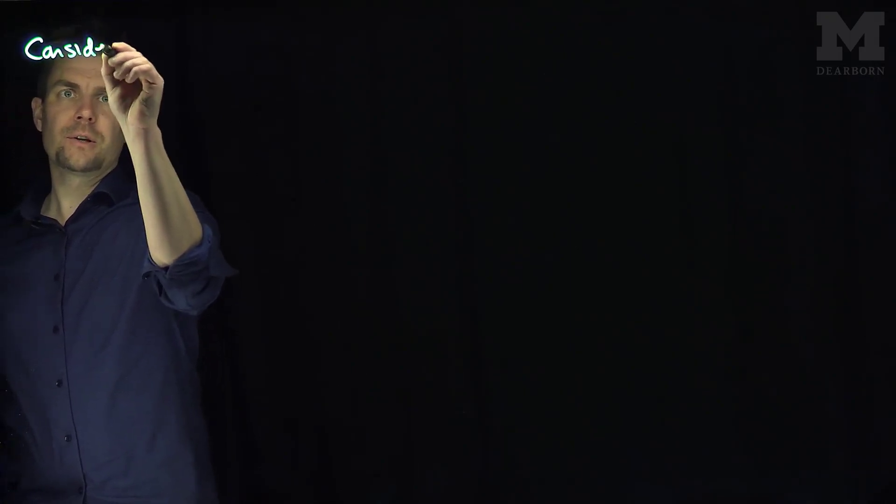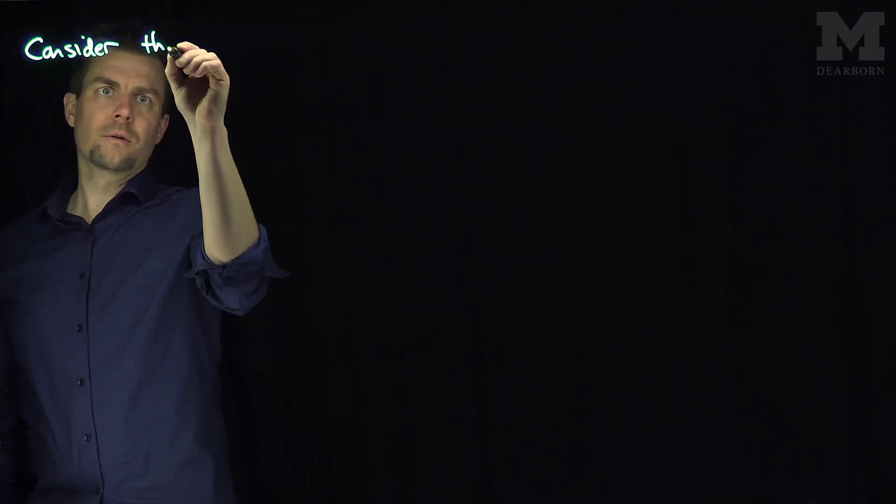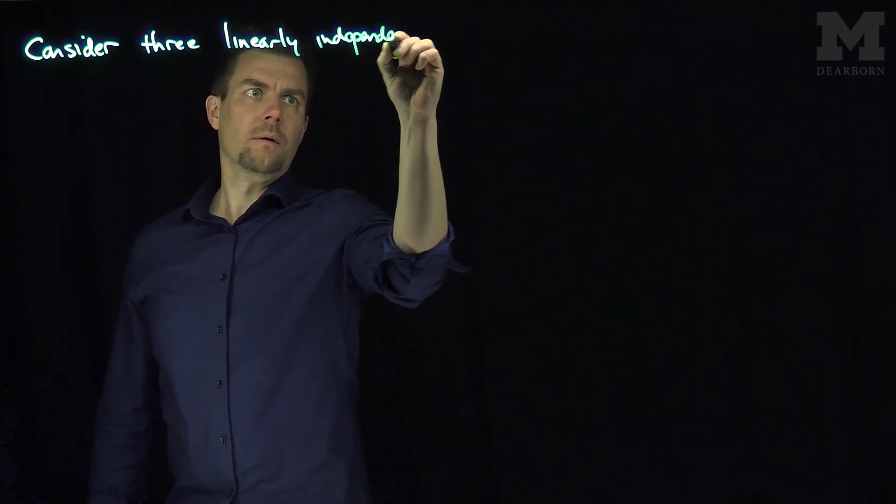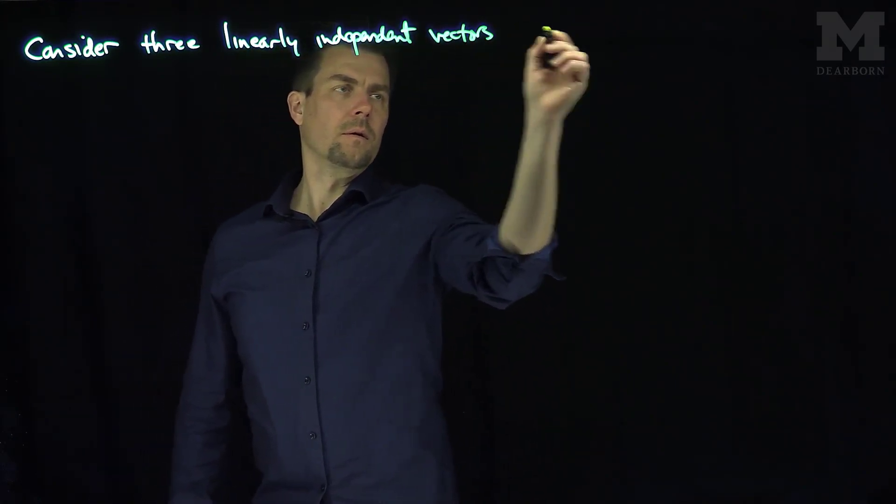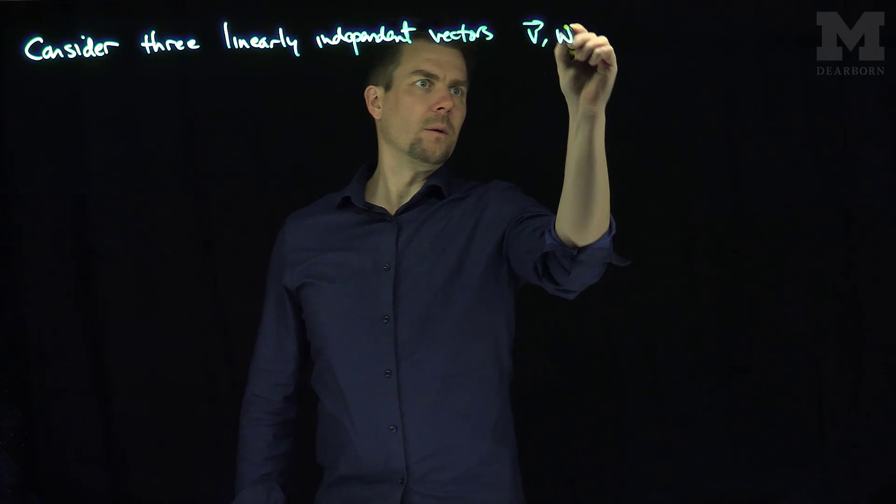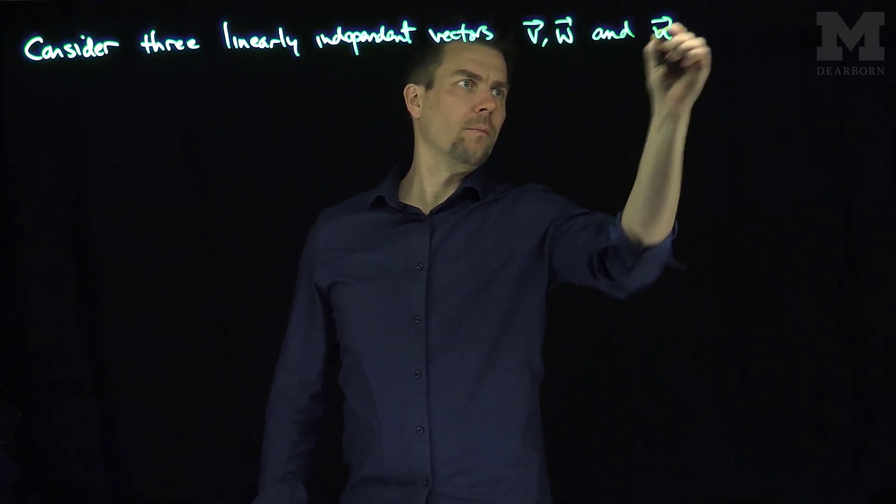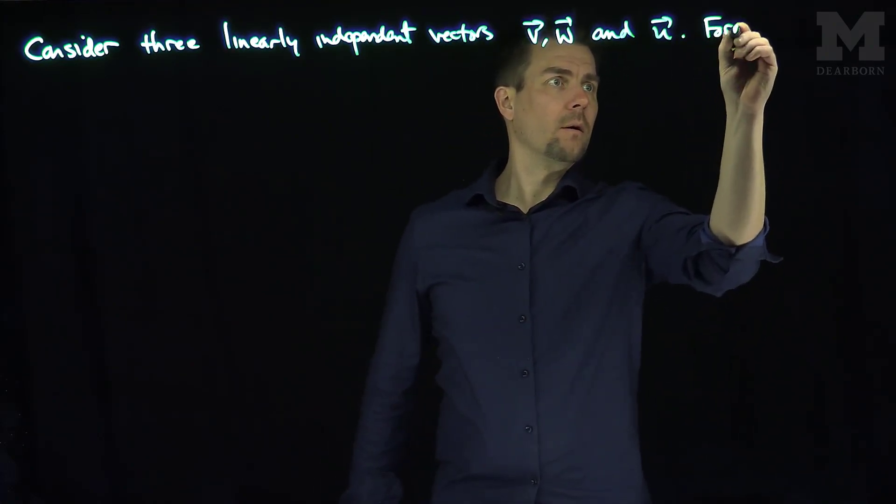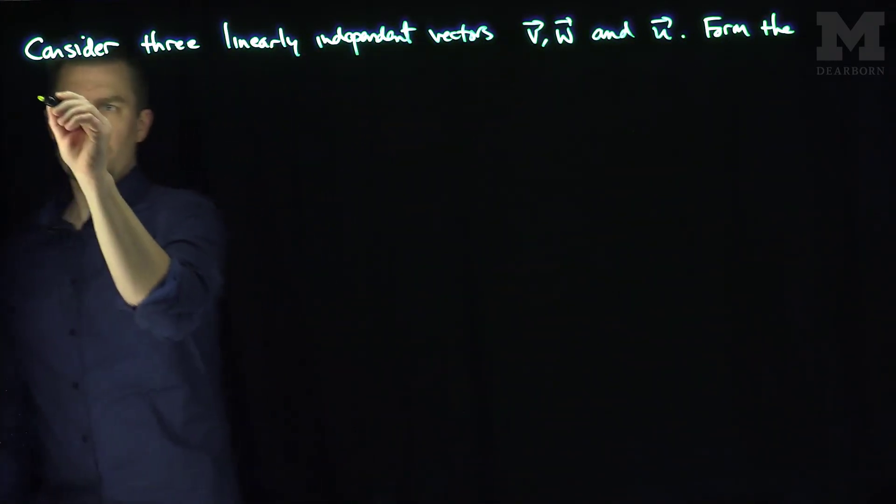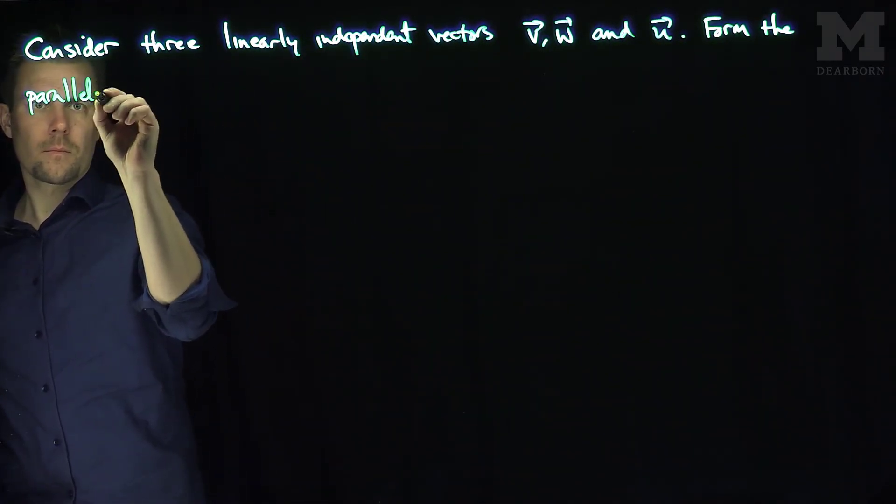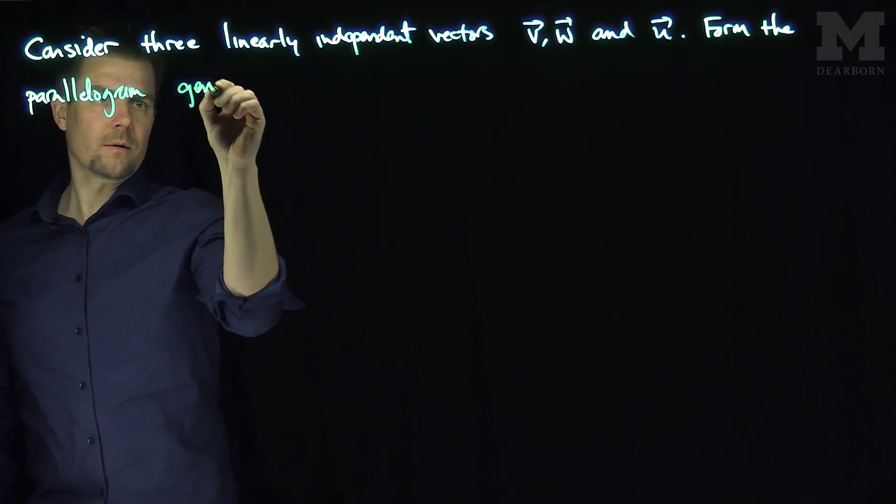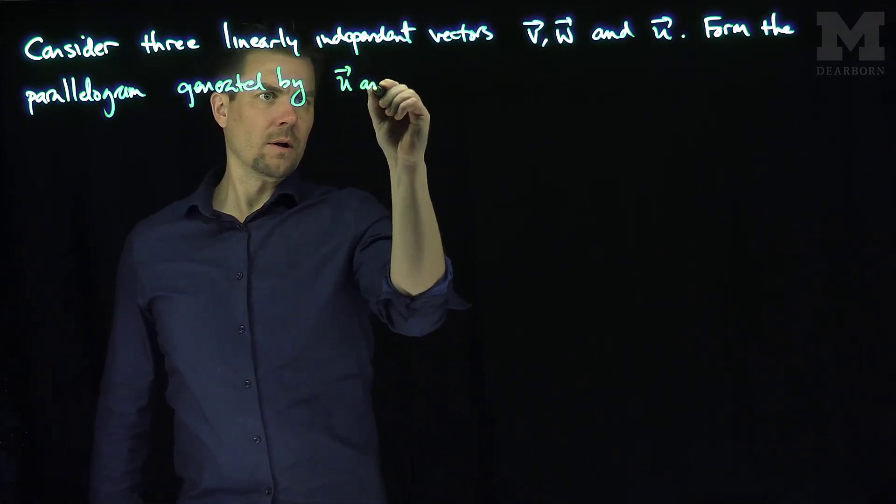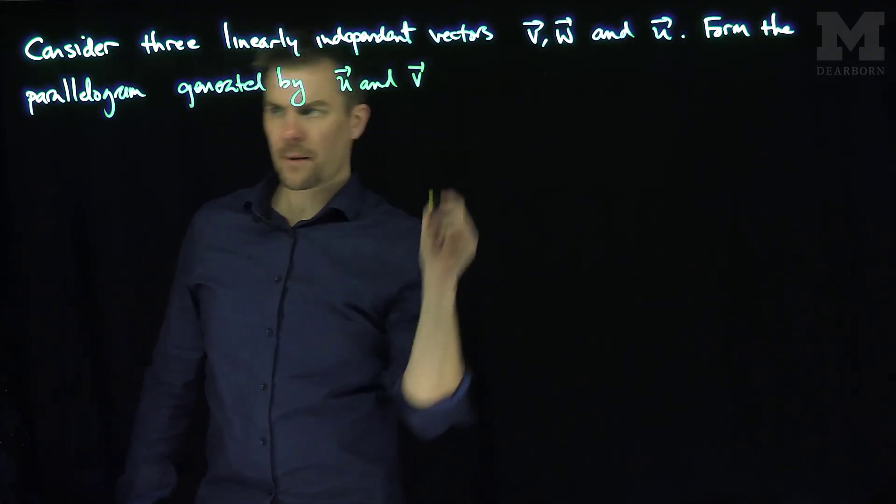If we consider three linearly independent vectors v, w, and u, what we can do is form a parallelogram with any two of them. Form the parallelogram generated by, let's just say, u and v. Easy enough to do.